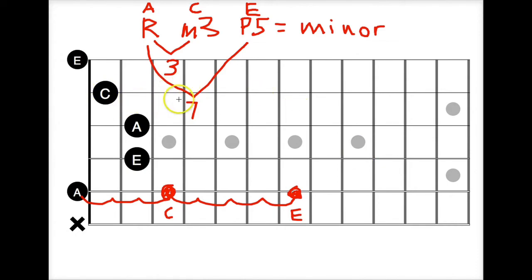If I started on C, and I go up one, two, three, this note right here would be E flat. Four, five, six, seven, and that's going to give me the G, and that's going to give me what is my C minor chord: C, E flat, G.